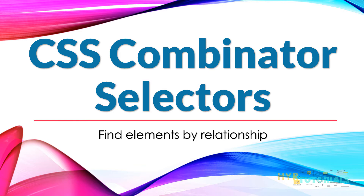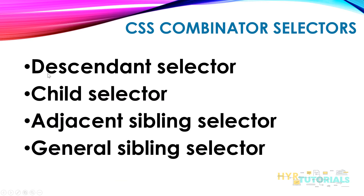In this video we will learn a new technique: taking the reference of other elements to find the current element. If your element has no attribute, or it might be a duplicate, you take the reference of another element and based on that you find the current one. This is establishing a relationship, and based on this relationship we find elements. A CSS combinator selector means you are writing a pattern using a relationship. There are four types: descendant selector, child selector, adjacent sibling selector, and general sibling selector.